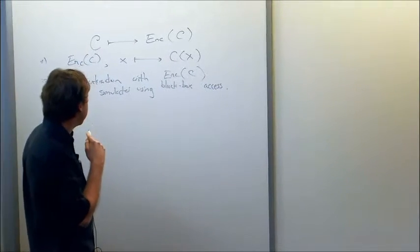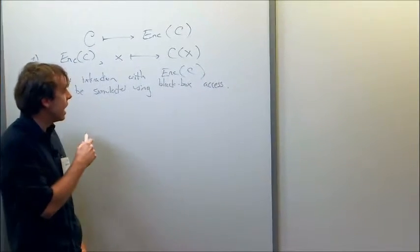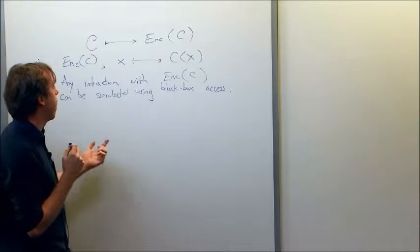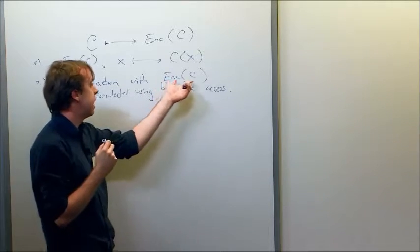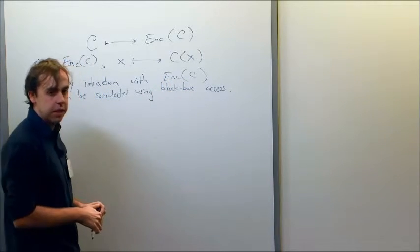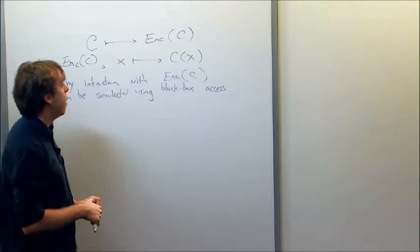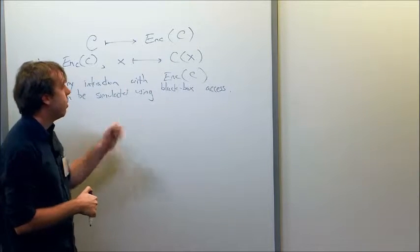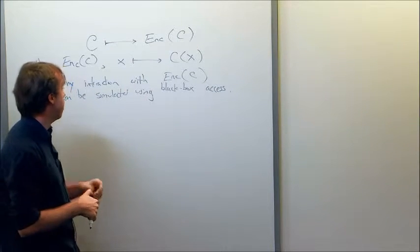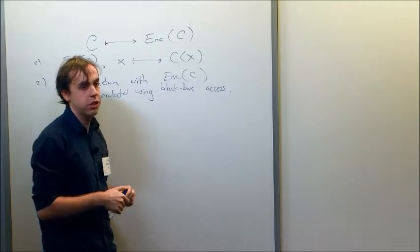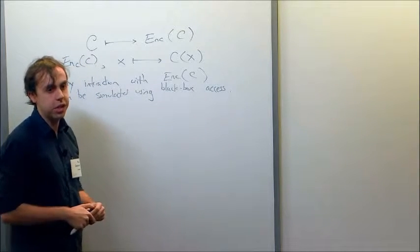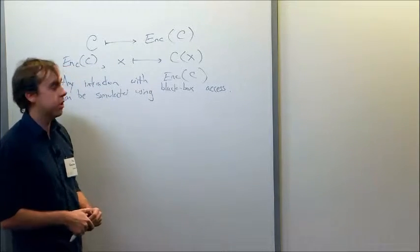As was pointed out, it's not exactly clear how we would formalize this. What does it mean to simulate some interaction with this data using black box access? This doesn't fit into the normal model. Besides, this is known to be impossible classically for any reasonable notion of simulation. So we should settle for indistinguishability obfuscation, which hides everything that it's possible to hide.